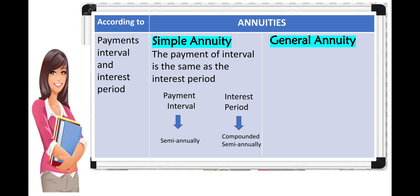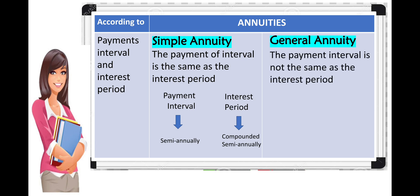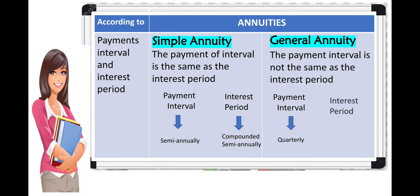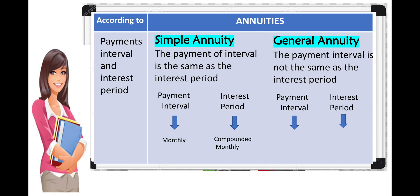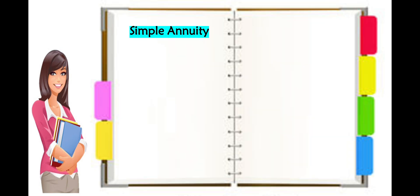For general annuity, the payment interval is not the same as the interest period. For example, the payment interval is quarterly but the interest period is compounded semi-annually — meaning you are paying quarterly but the computed interest is compounded semi-annually. Another example: the payment interval is monthly while the interest is compounded quarterly. They are not the same — that is general annuity.